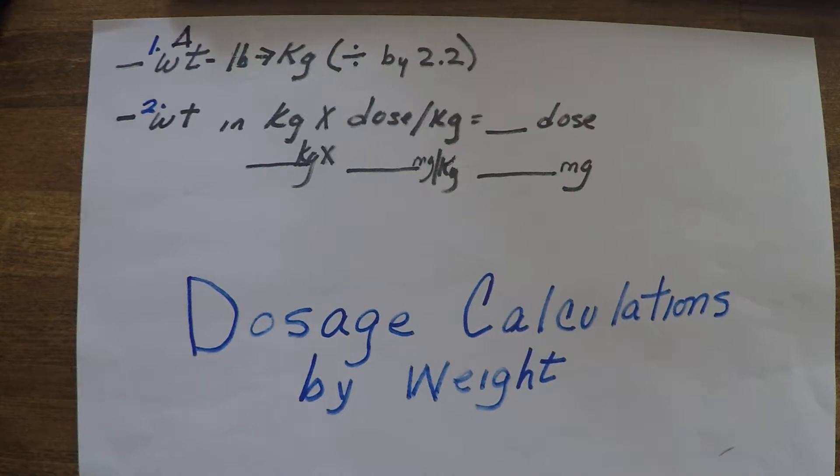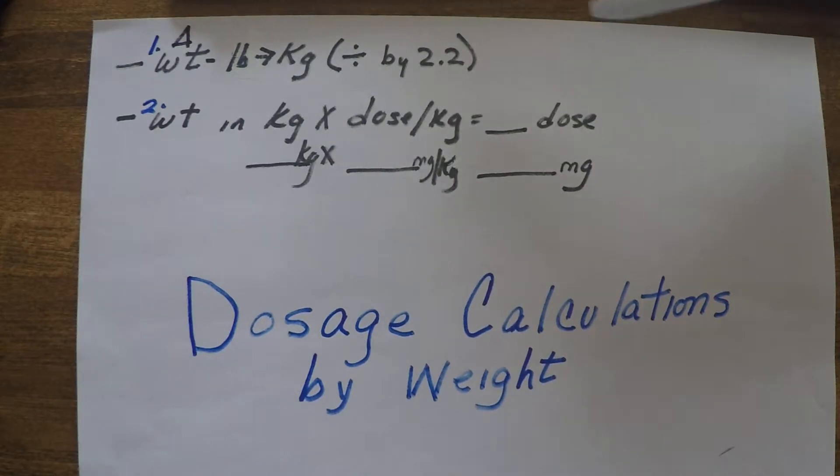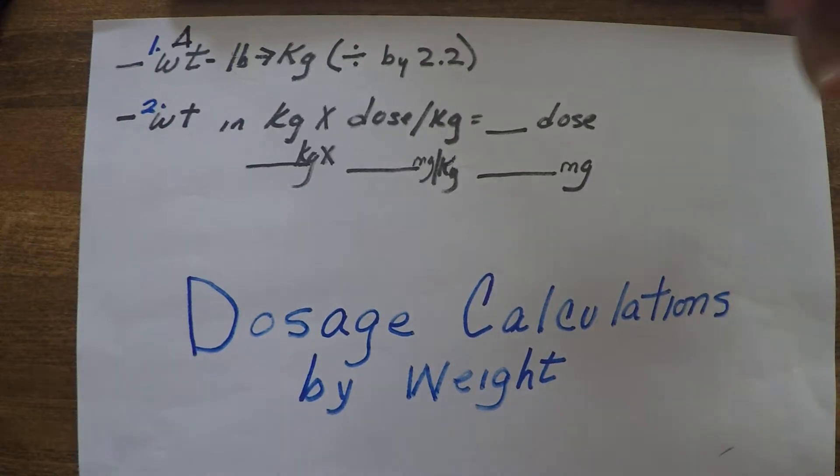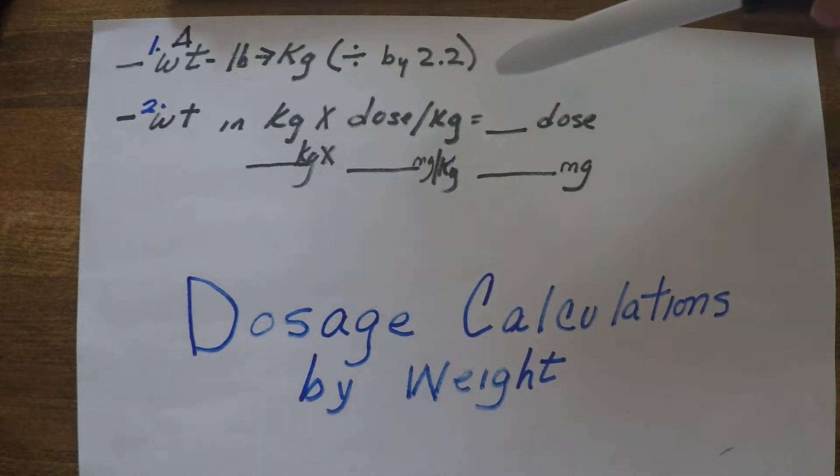So there's only two steps when you go through that. The first thing that you want to do is change the weight from pounds to kilograms, and of course we'll divide by 2.2. The next step is you want to take the weight in kilograms, multiply it times the dose per kilogram, and that will give you your total daily dose.